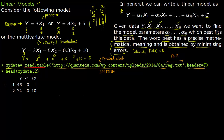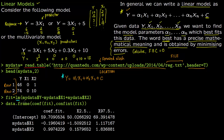Looking at the first two rows of the data: the dataset contains columns y, x1, and x2. Corresponding to each value of y you have a value of x1 and a value of x2. The number of values in y equals the number in x1, which equals the number in x2. Our objective is to find a model of the form y = α1·x1 + α2·x2 + constant that best fits this data.